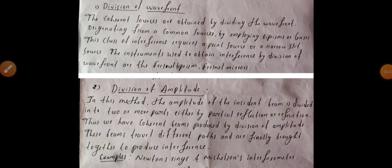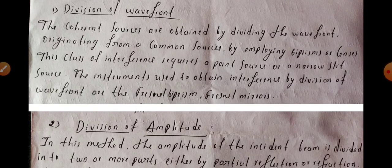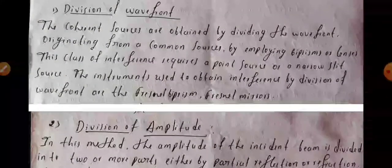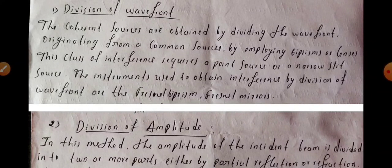Now let us see division of wavefront and division of amplitude. In division of wavefront, the coherent sources are obtained by dividing the wavefront originating from a common source by employing biprisms or lenses. This class of interference requires a point source or narrow slit source.